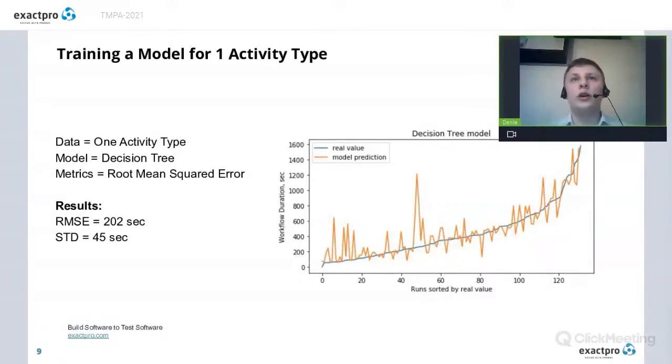So now let's move forward to our research results. At the very beginning of our research, we decided to evaluate the duration for just one activity type. In this case, the telemetry data was taken from first to the last second of one particular activity. Using the decision tree regressor model, we got the following results. So here on the x-axis, we have different runs of one particular activity sorted by real duration value. And on y-axis, we have duration in seconds. As the main metric to assess precision of our models, we chose root mean square error. It's the basic metric to estimate precision for all regression models which we used in our work.